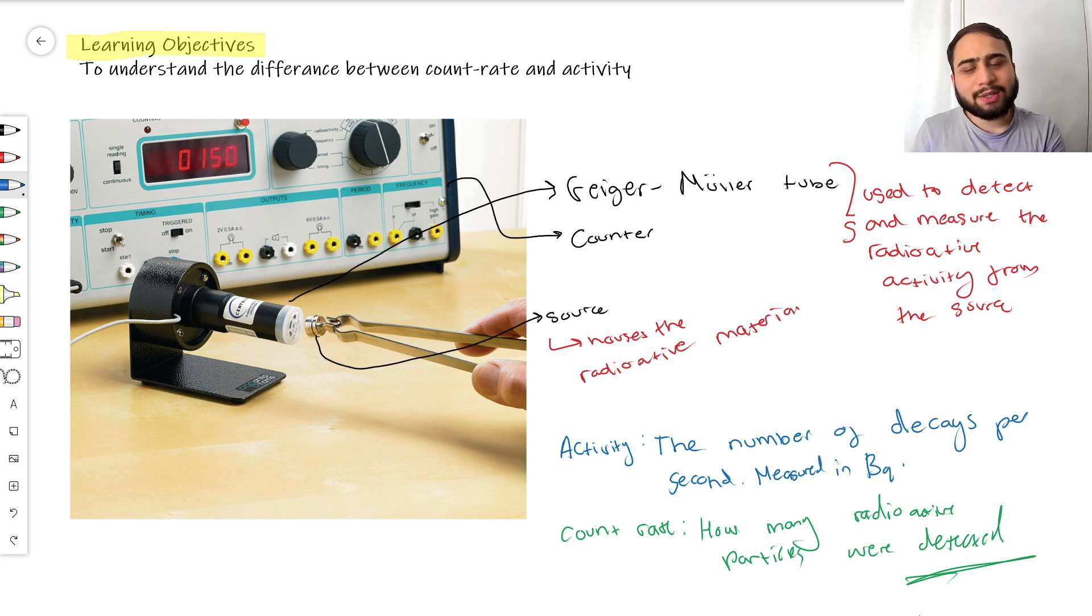But we don't live in a perfect world - we always have some kind of uncertainty. The count rate is pretty much always different from the actual activity of the source itself. That's due to not only background radiation but also because the source doesn't always send out all this radiation directly into the tube.